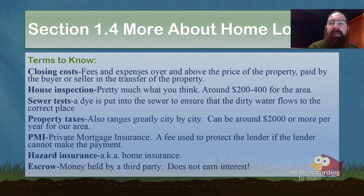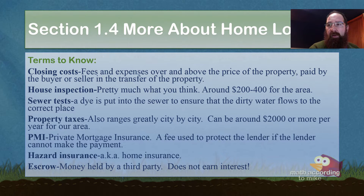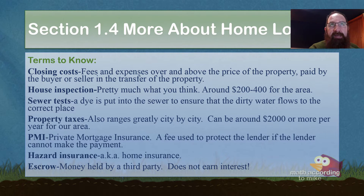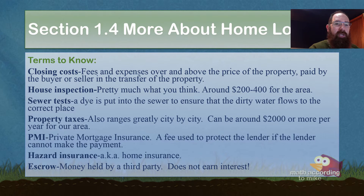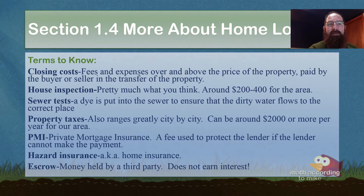You basically meet in a public place and hand over a check if you are the person paying for the closing costs. This covers things like lawyer fees, sewer dye tests, real estate agent fees, paperwork fees, and land survey fees — meaning you're paying to make sure the property you're getting can be sold and is actually owned by the person selling it.